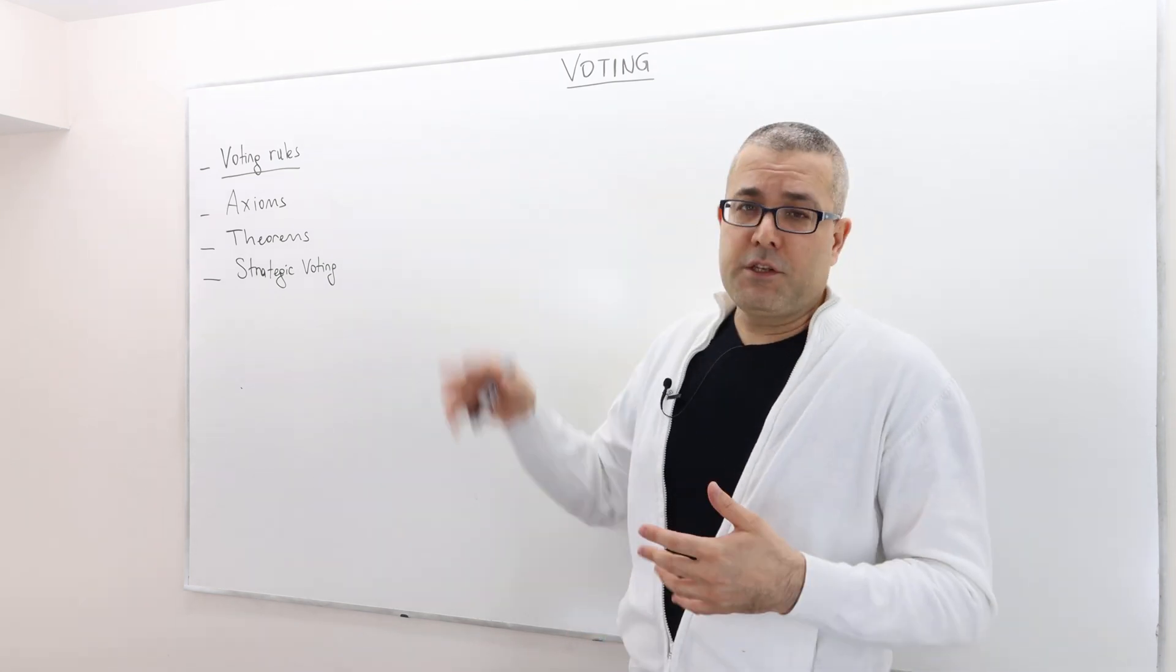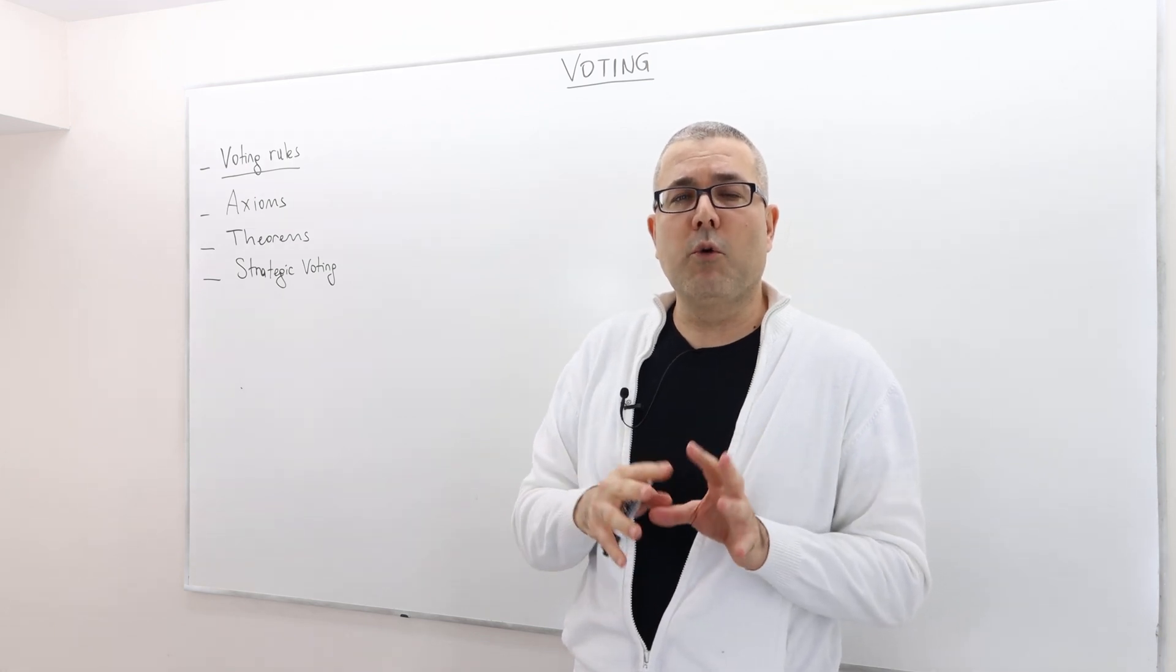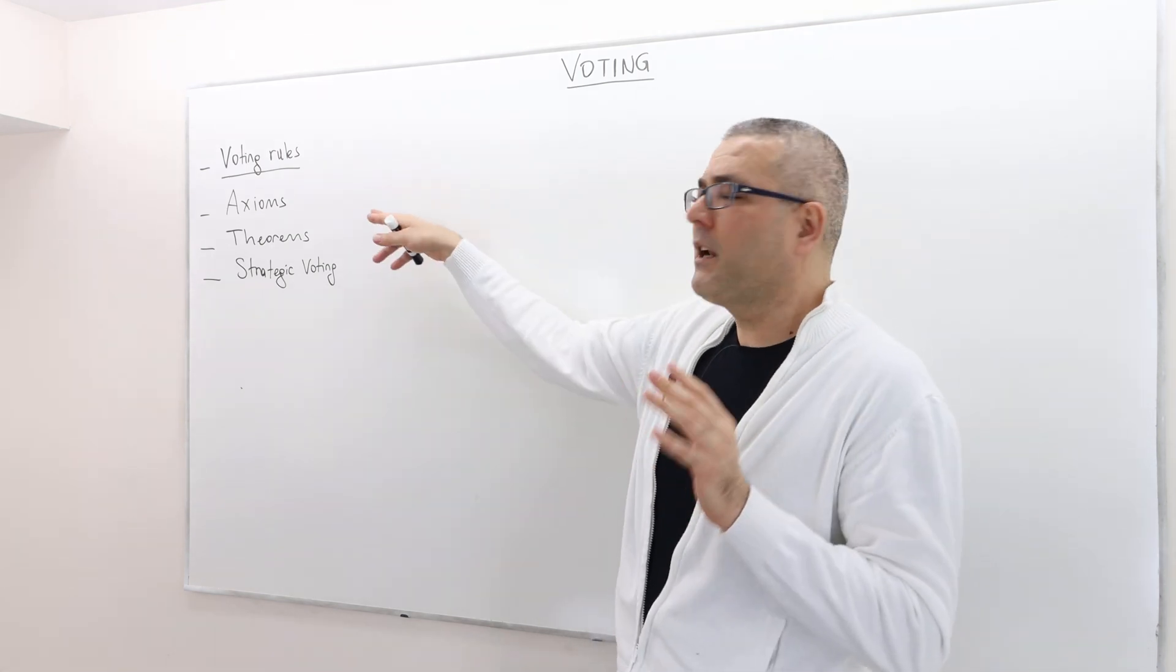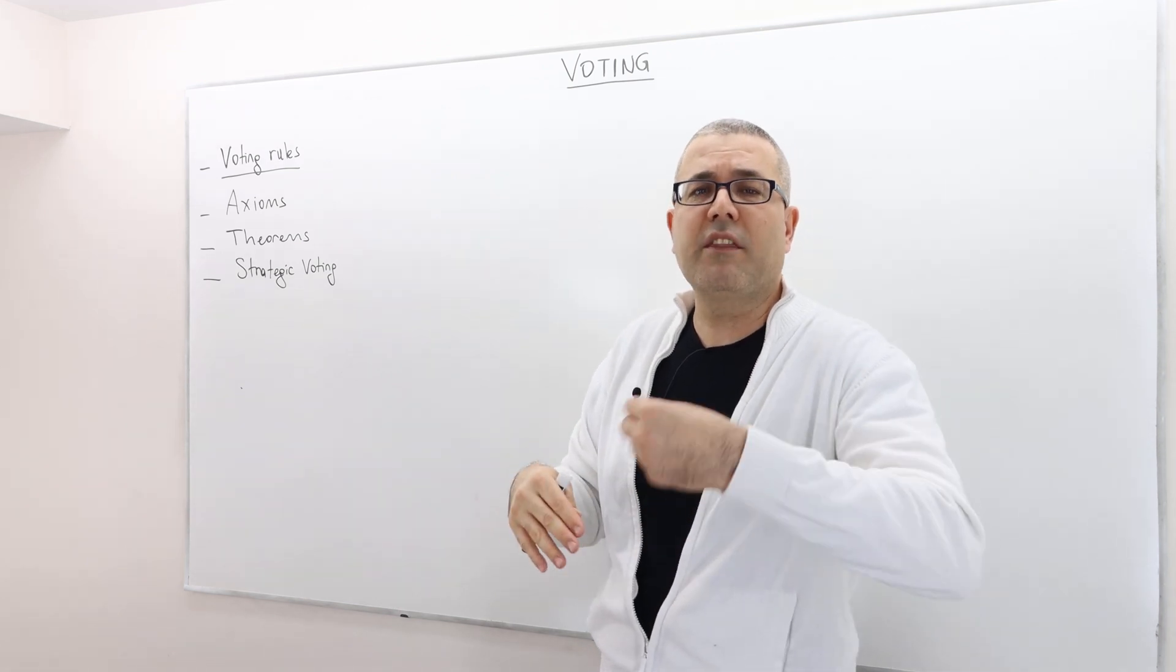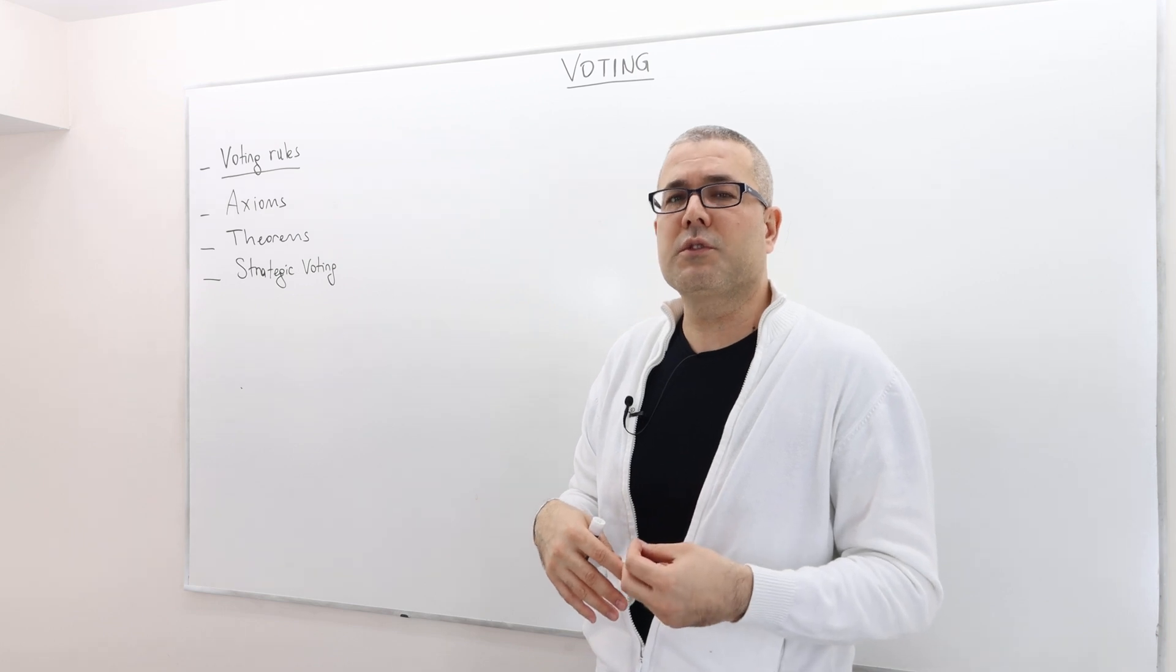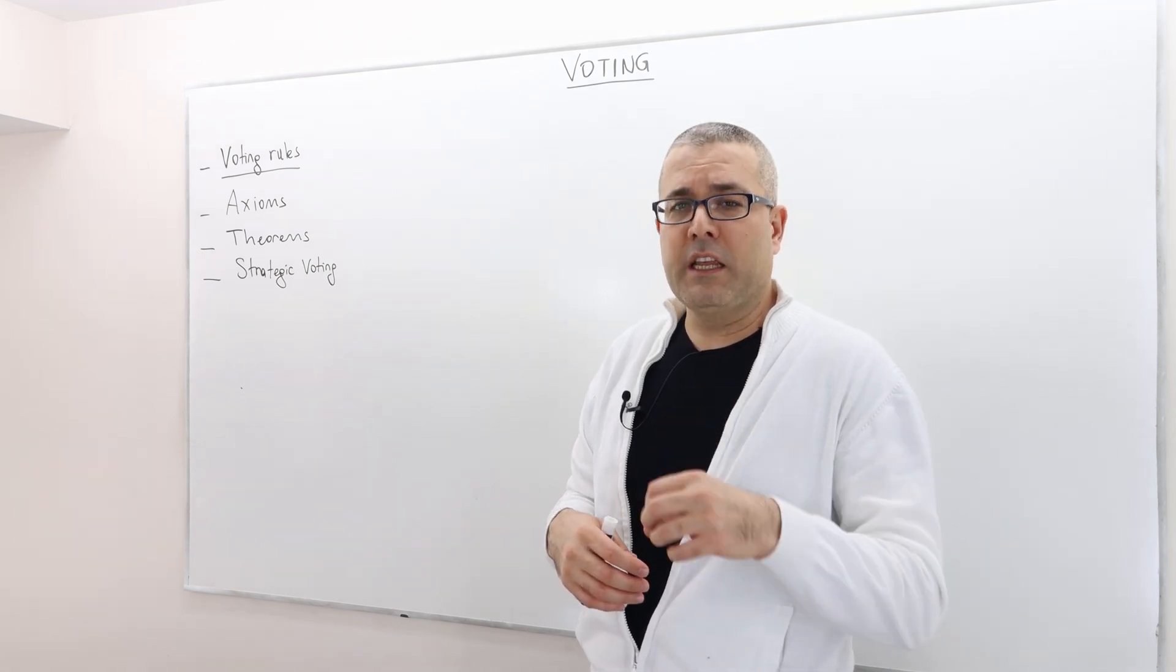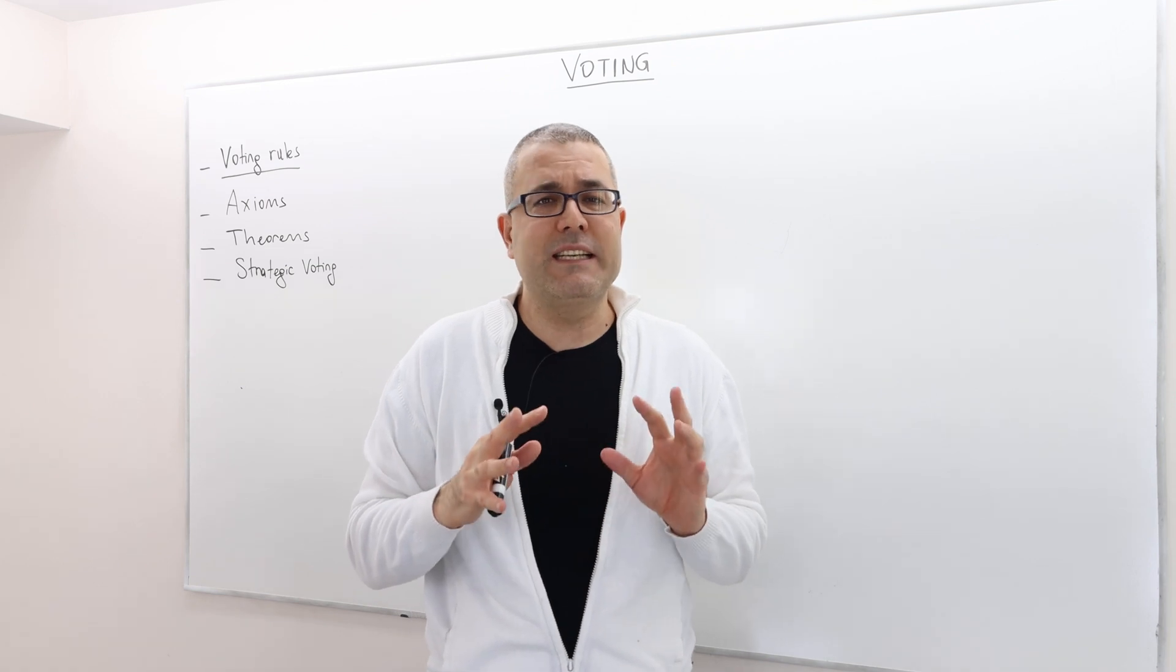First things first, we're going to talk about some voting rules. I'm not going to give you the formal definitions of each rule. Rather, I'm going to give you an informal description of those rules and some examples to show how we calculate the outcome for any given profile. But let me first give you a basic setup.